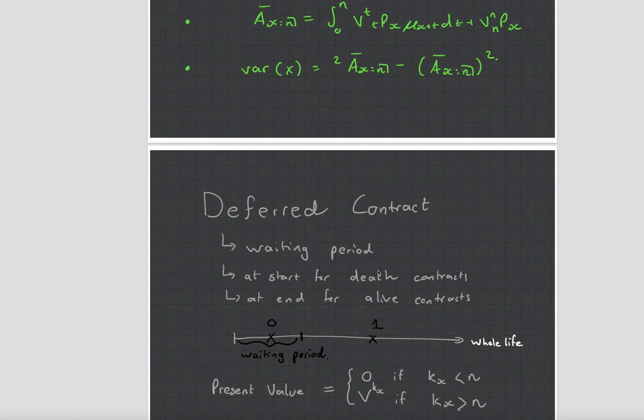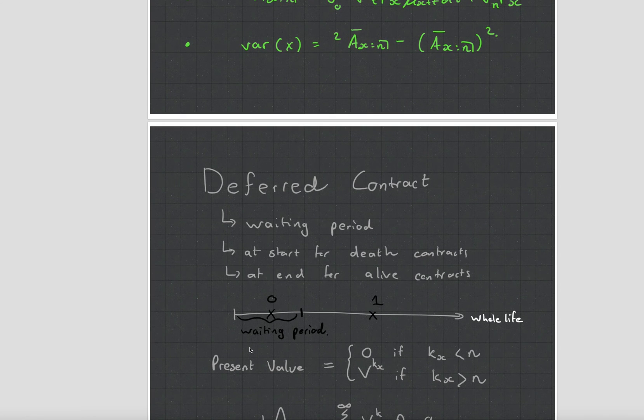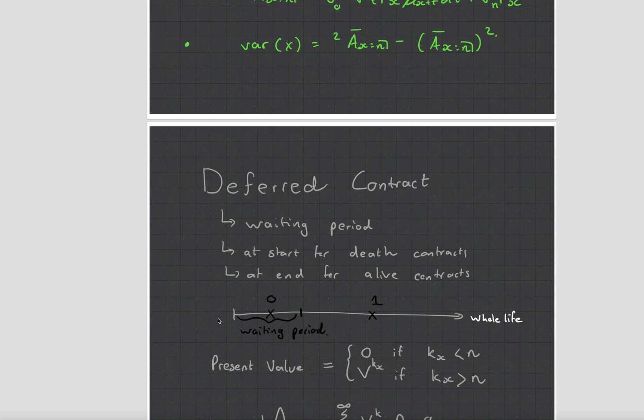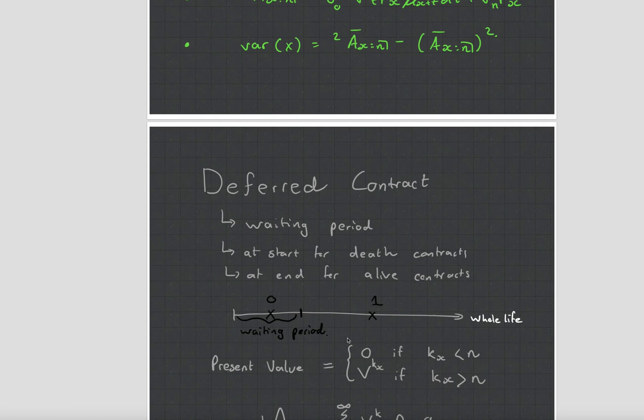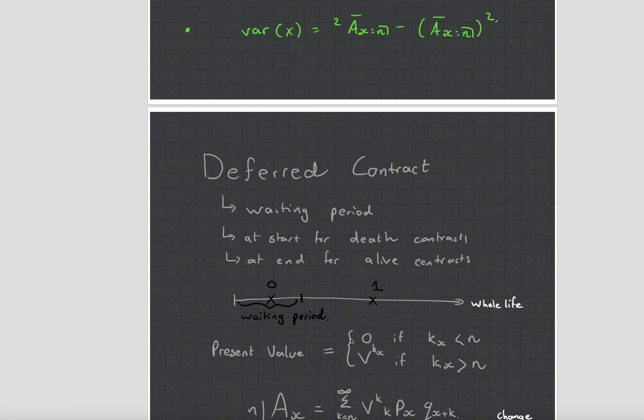Interestingly depending on how you die they have different waiting periods. So if it's an accidental death then there is no waiting period. If it's a natural cause it's normally a six month waiting period and if you die by suicide it's a 24 month period which is quite a new thing because before suicide was an exclusion. So if you die by suicide you didn't get paid anything but now it's just got a 24 month waiting period.